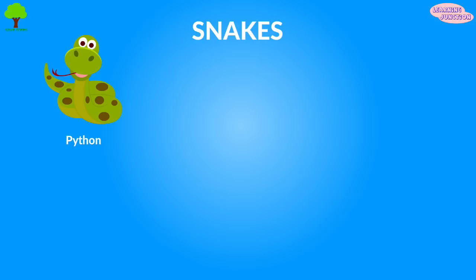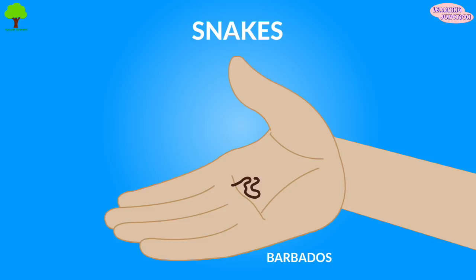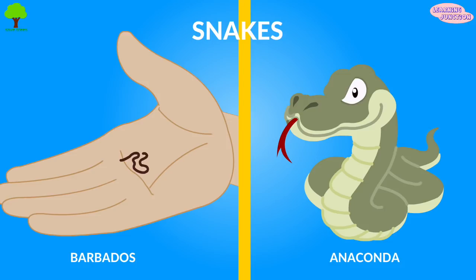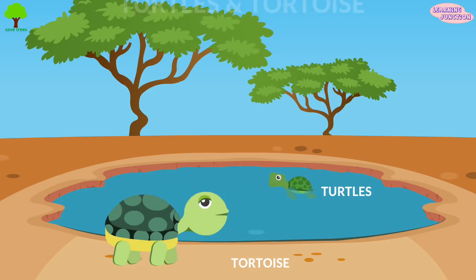The Barbados thread snake is the smallest snake, and the largest snake is the green anaconda.